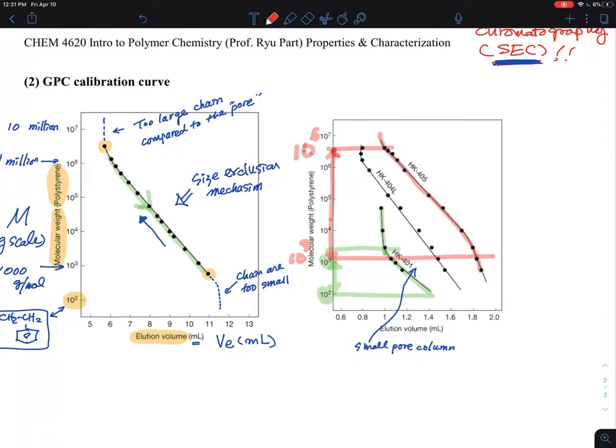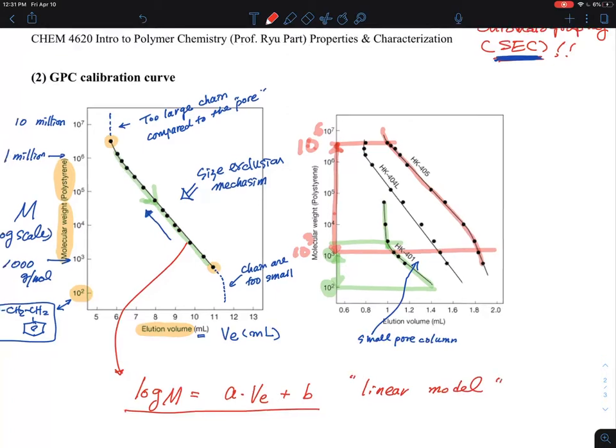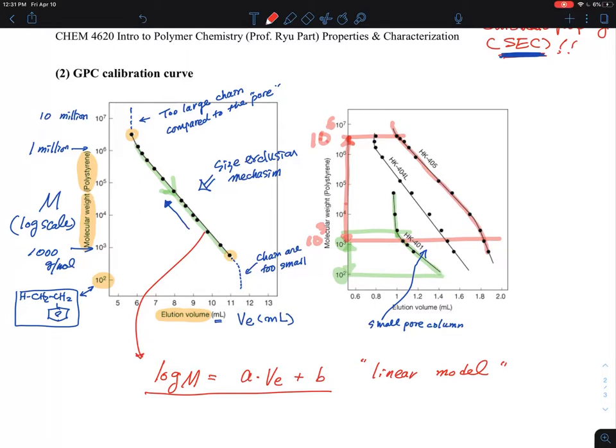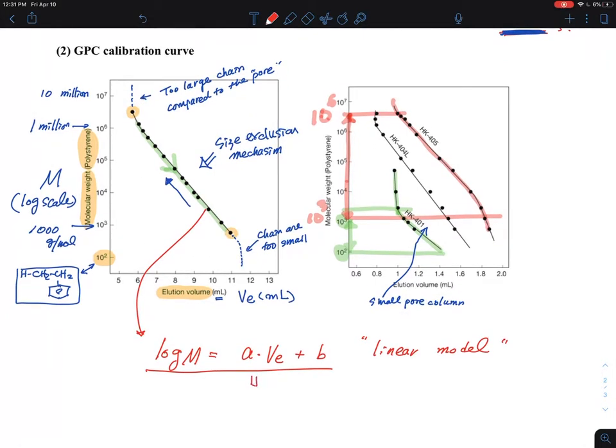And so if you go to this relationship, you can think about, okay, log molecular weight. In a very simple sense, it is A times elution volume with an offset B, right? This is a linear model. So you can have this calibration curve based on that. But people probably use a more cubic model, which is A·Ve³ + B·Ve² + C·Ve + D. This is a cubic model.